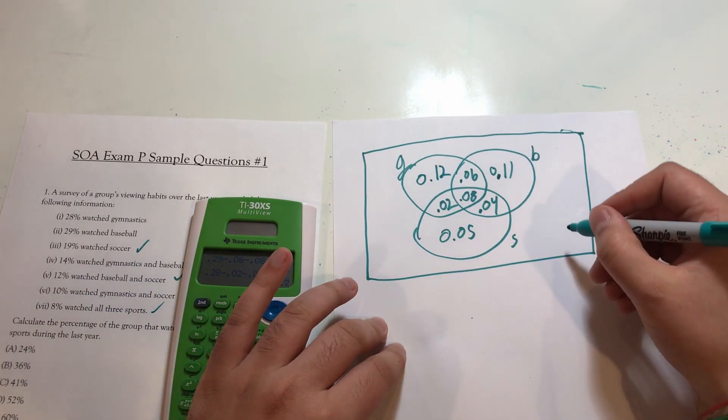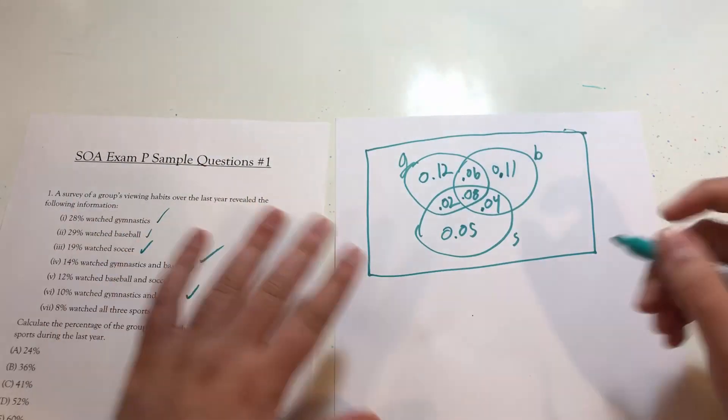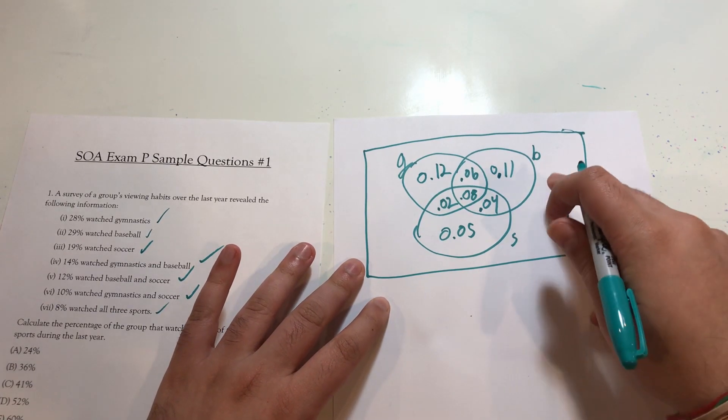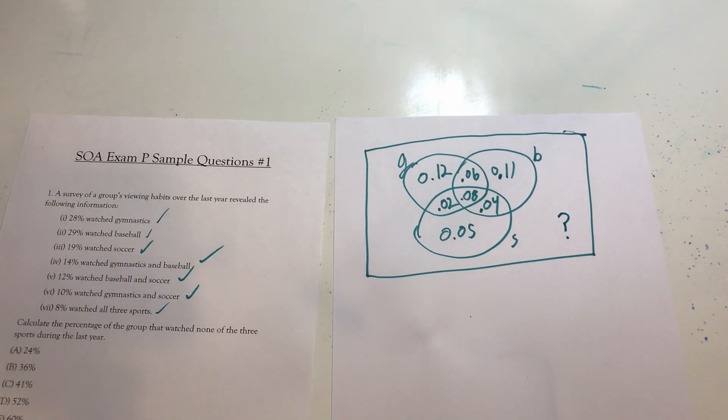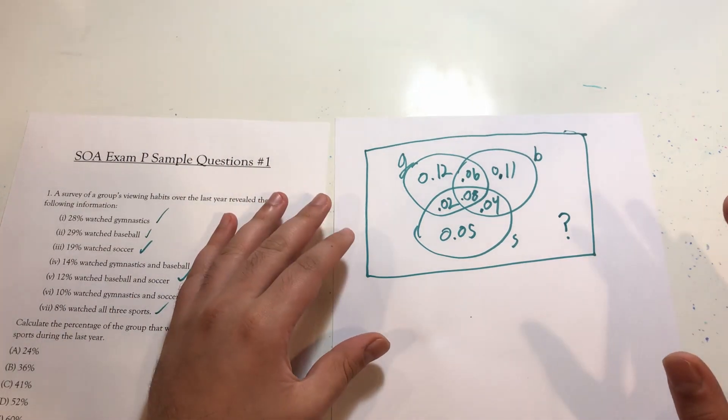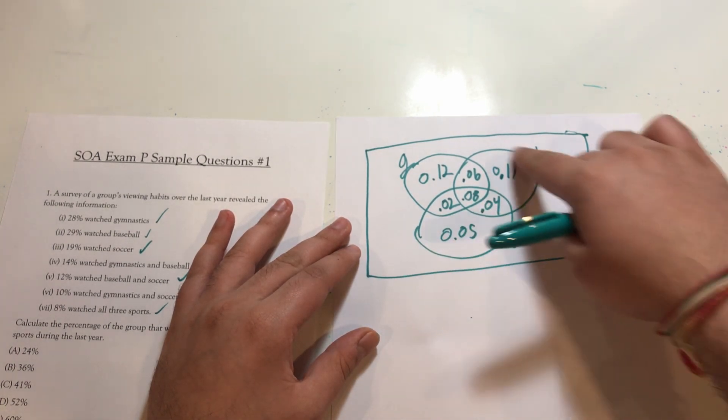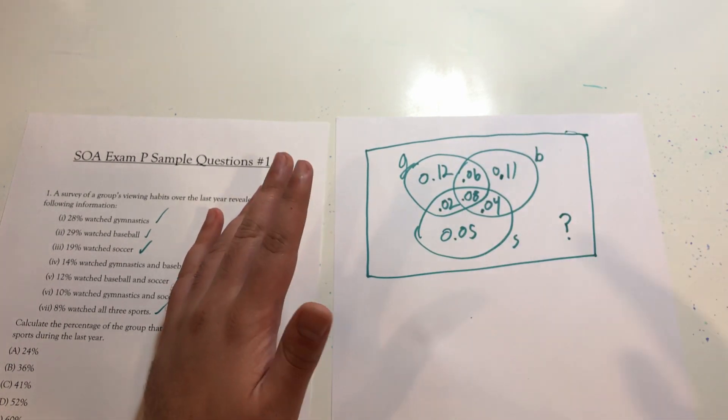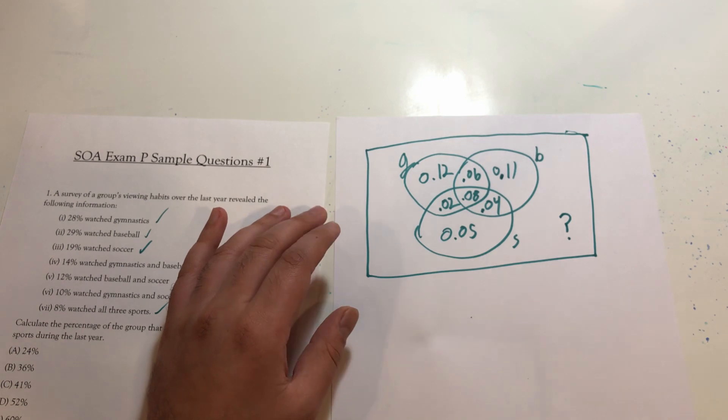Okay. Now what we're looking for is those that watched none of them. We've put in all our information. We're looking for how many people are outside here. Now this is where the most basic rule in probability comes in. This question is a question on general probability and fundamental rules. The most basic rule is that the probability of your sample space must be one. So all these probabilities here need to sum to one. Now I have every single spot filled in except for one of them. That is very easy to solve for.